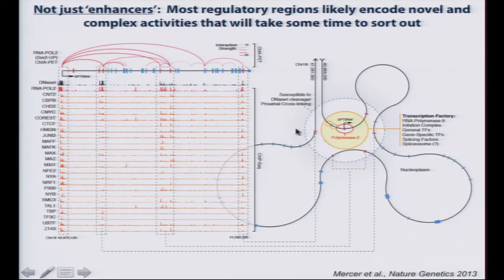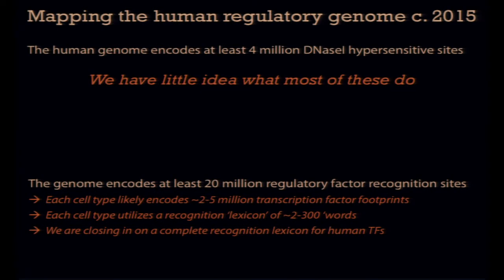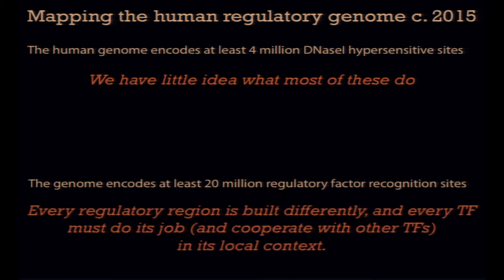For example, we stumbled into a set of elements — 30,000 to 40,000 of these in the genome — that park themselves near or partly on exons and loop them to the promoter region, where they seem to be modulating rates of alternative splicing. There are likely many such complex activities to be sorted out. With respect to the transcription factor landscape, every regulatory region is built differently, and every transcription factor has to do its job in its local context, with local partners, in its local chromatin environment — and there's a widening discrepancy between what's actually going on in the genome and what you can recreate in artificial assays.